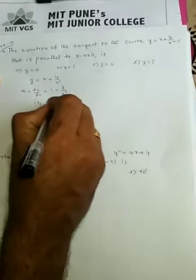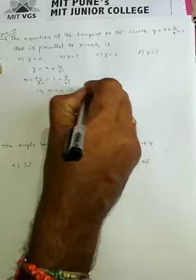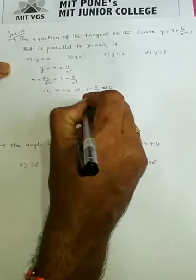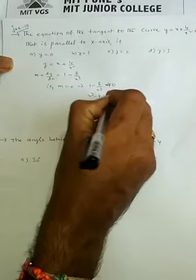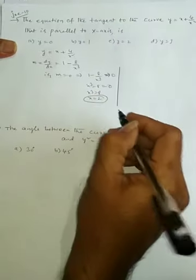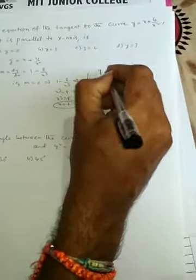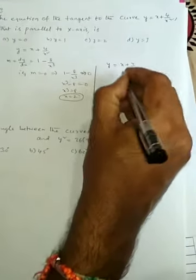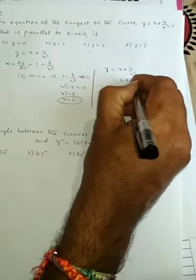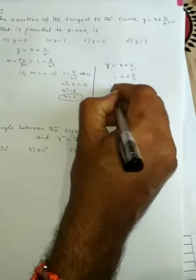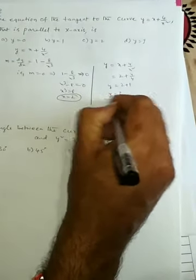Setting m = 0: 1 minus 8/x³ = 0, so x³ minus 8 = 0, giving x³ = 8 and x = 2. Substituting x = 2 into y = x + 4/x²: y = 2 + 4/4 = 2 + 1, so y = 3.